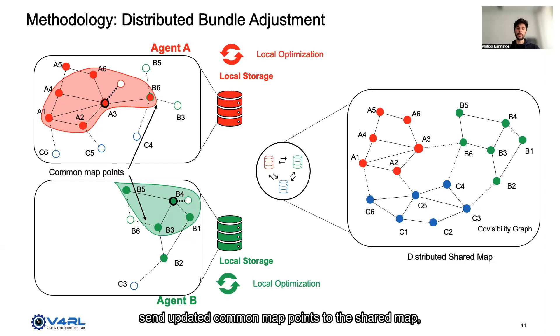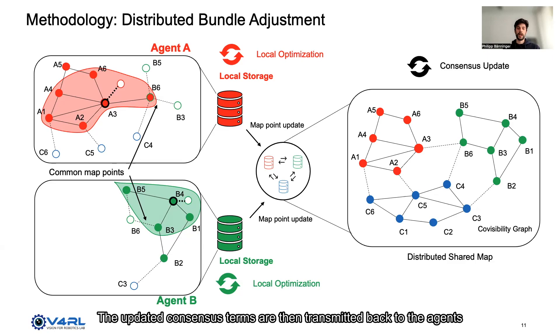The updated consensus terms are then transmitted back to the agents and incorporated into the local optimization. Running this procedure over multiple iterations ensures a globally consistent and converged solution.